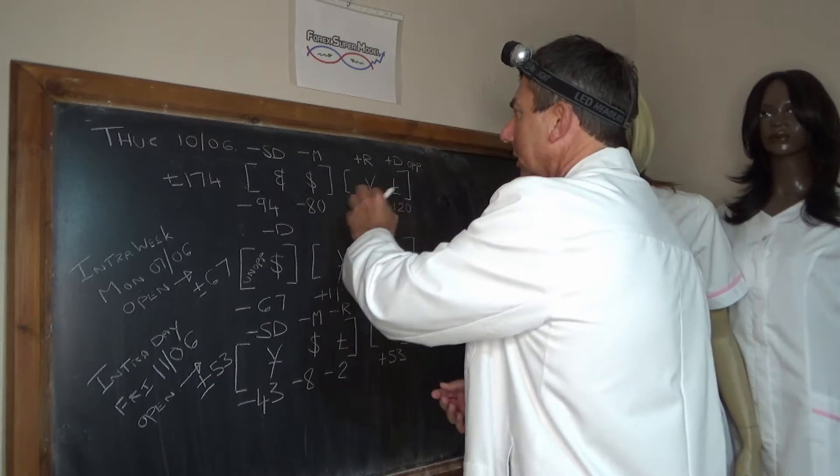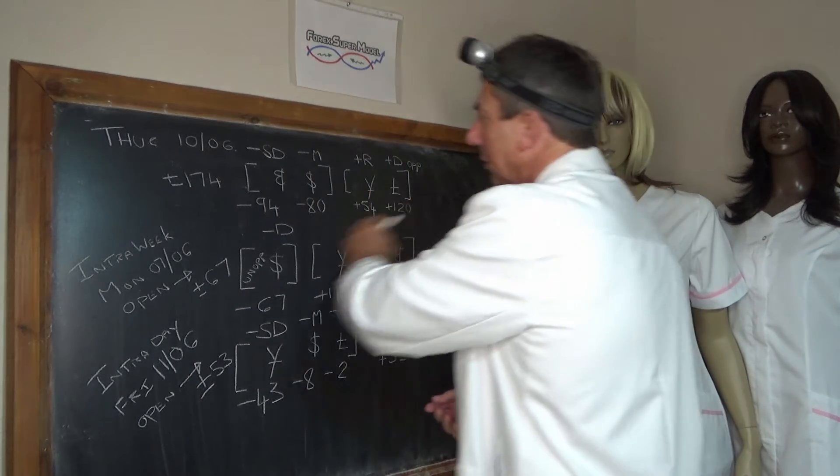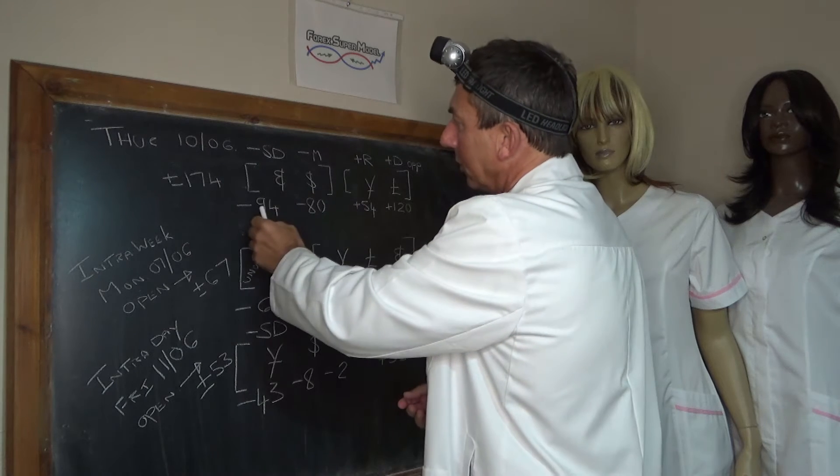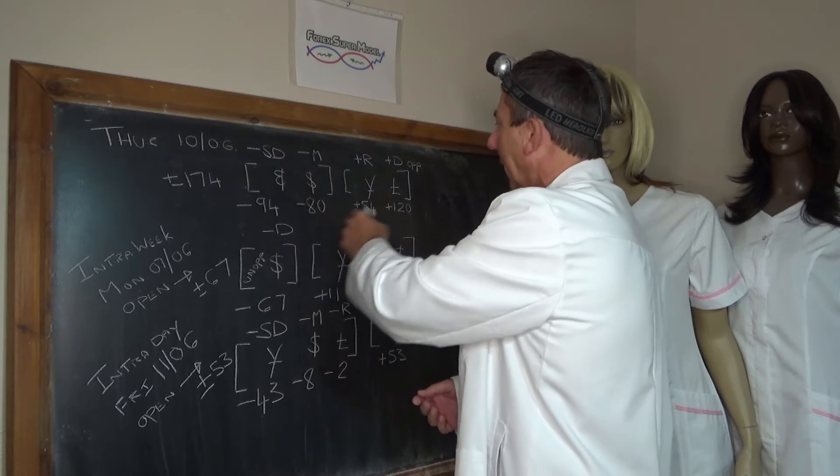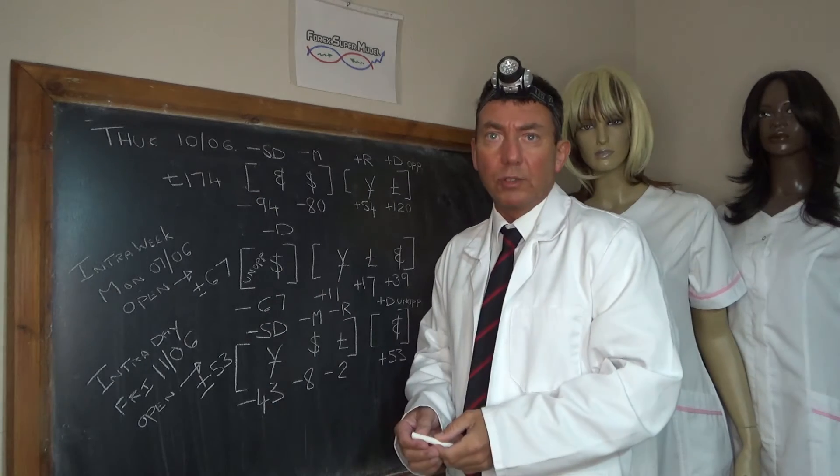Yesterday then, Thursday the 10th, we had a positive unopposed driver in the pound at plus 120. Front and back door flows mainly coming out the euro at minus 94, out the dollar at minus 80, and the yen was the positive rock at plus 54. Activity plus or minus 174.